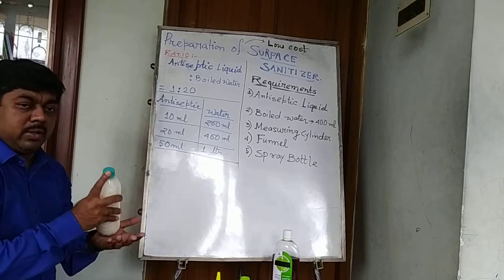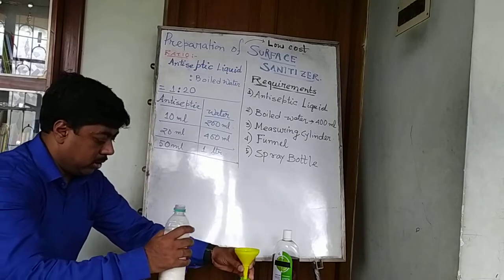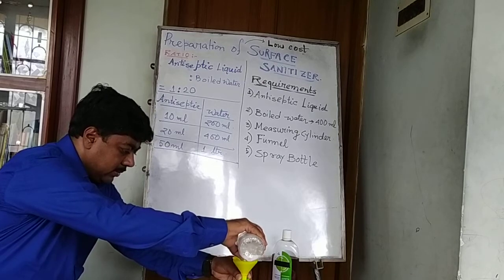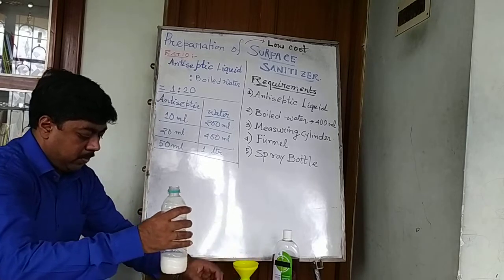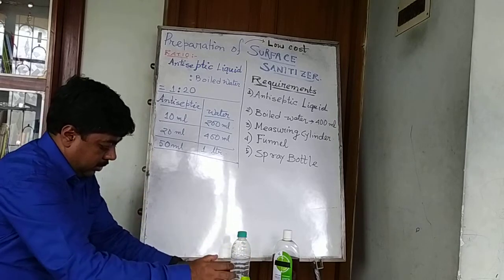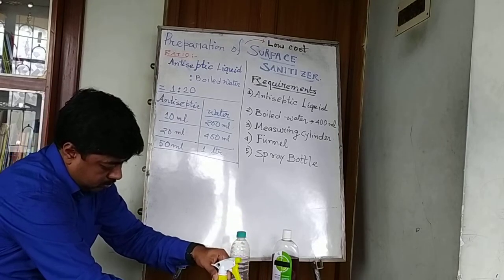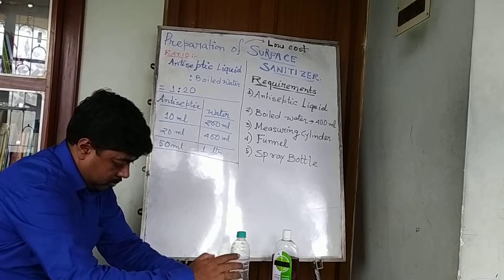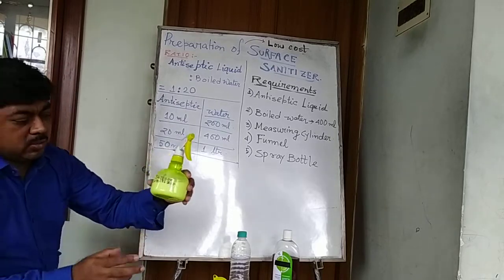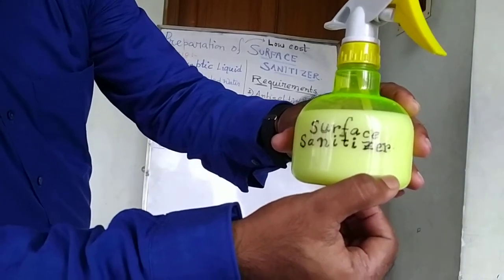Now shake it very well. Next, pour it into the spray bottle using a simple and easy process. I am keeping some aside for my nephews. The surface sanitizer is ready to use! For your convenience, you can write with a permanent marker — 'Surface Sanitizer' — on the spray bottle, just as I have done.